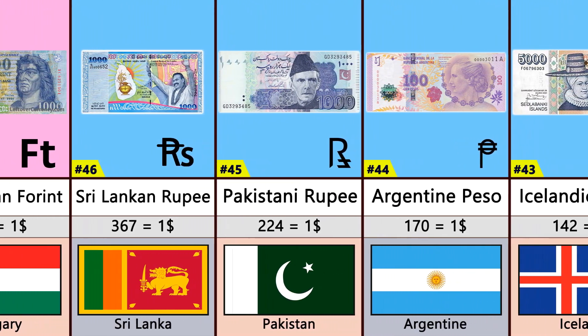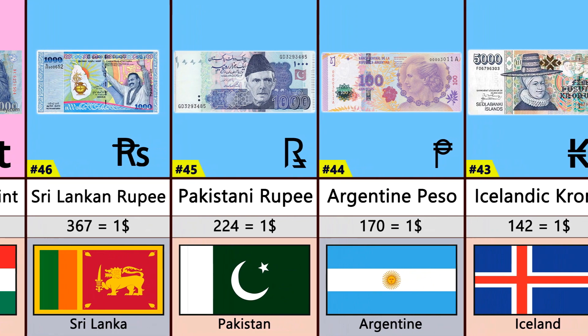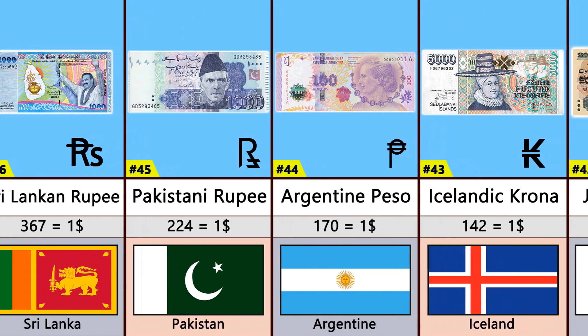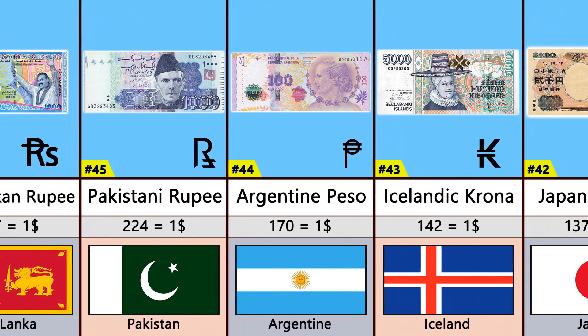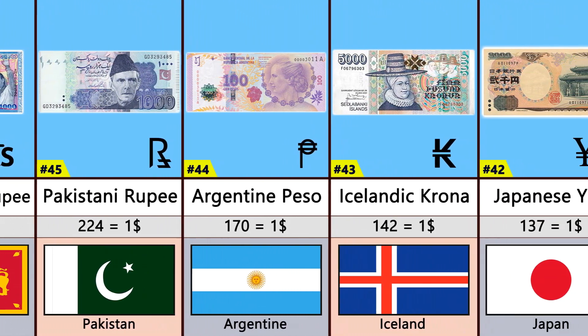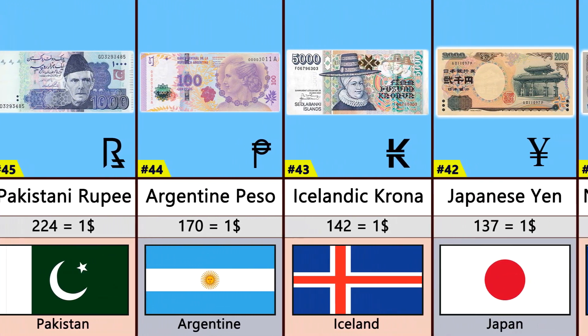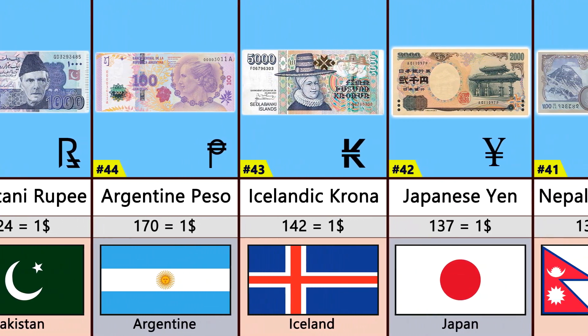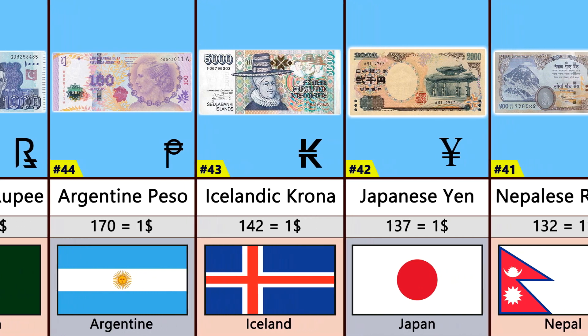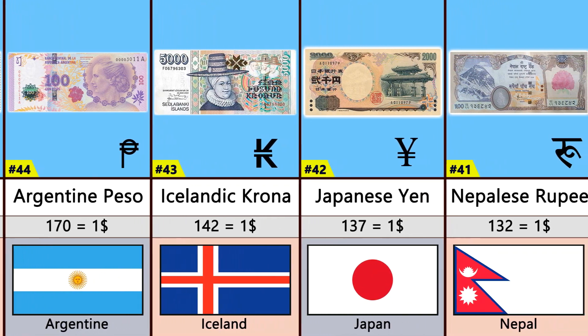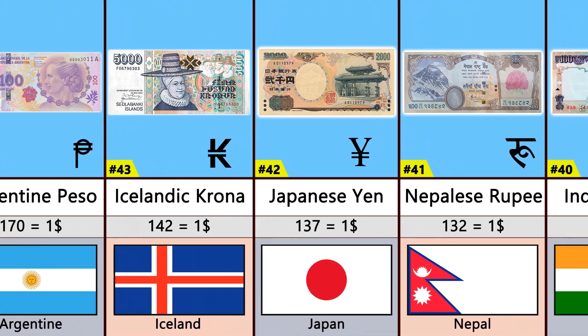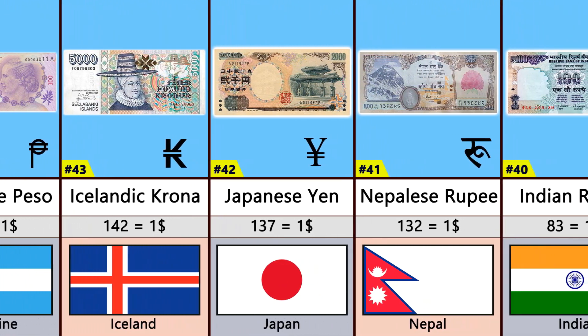Number 43: Icelandic Krona. Number 42: Japanese Yen. Number 41: Nepalese Rupee. Number 40: Indian Rupee.